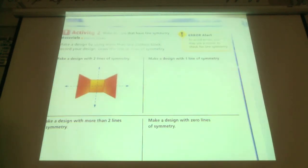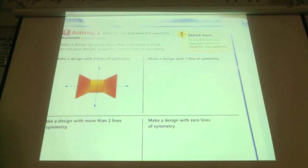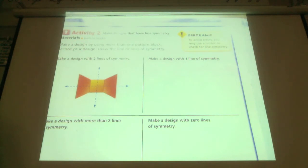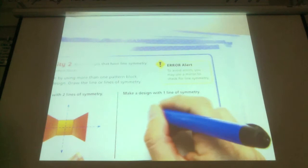Make a design by using more than one pattern block — you can just draw. Record your design and then draw a line of symmetry. Looking at this bow-shaped item, they drew it and then made two lines of symmetry. You're going to make your own design with one line of symmetry. Can anybody think of a shape that would only have one line of symmetry? A heart.